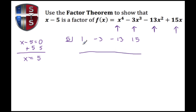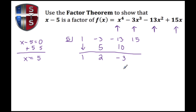We bring down the first coefficient, then multiply and add repeatedly. 5 times 1 gives 5; negative 3 plus 5 gives positive 2. Then 5 times 2 gives 10; negative 13 plus 10 gives negative 3. Then 5 times negative 3 gives negative 15; and 15 minus 15 gives 0.